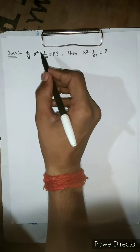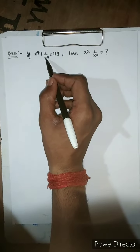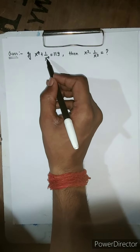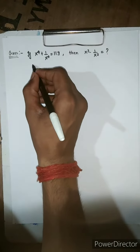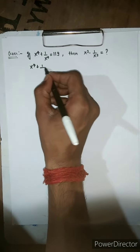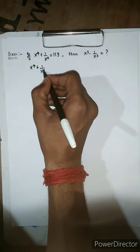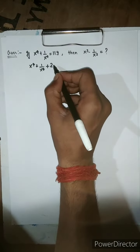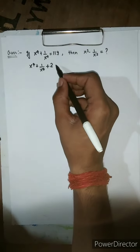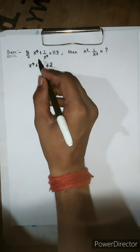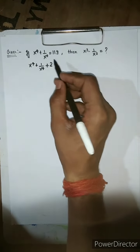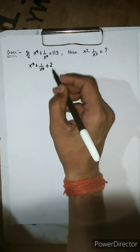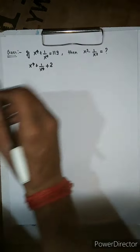Here we have x raised to the power 4 plus 1 over x raised to the power 4. If we add 2 to both sides we will get x⁴ plus 1/x⁴ plus 2. The main purpose of adding 2 is to make it a perfect square of x² plus 1 over x². Let's see how we do it.